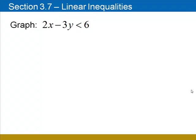Let's take a look at a few examples. We're going to begin by graphing 2x minus 3y is less than 6. Notice the inequality symbol is less than, not equal to, so we'll graph this using a dashed line.